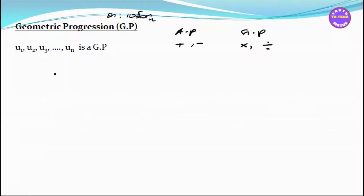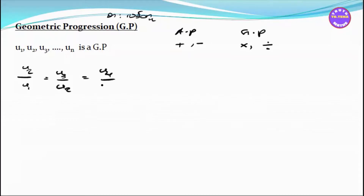The common ratio R is defined as the ratio of consecutive terms: U2 by U1, U3 by U2, U4 by U3, and Un by Un-minus-1. This ratio is constant throughout the geometric progression.